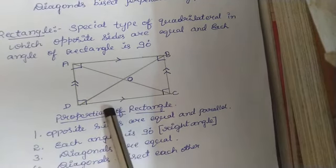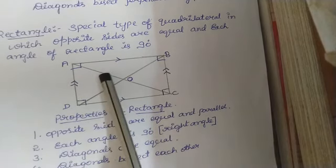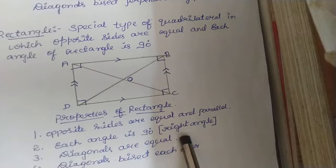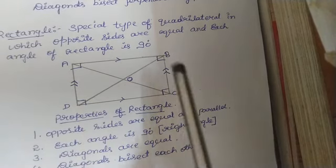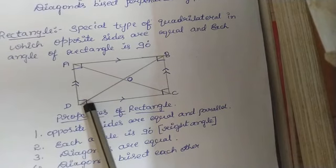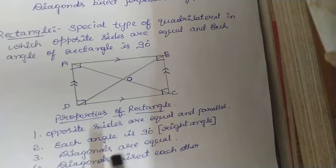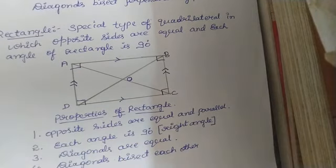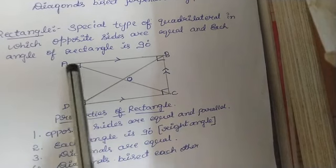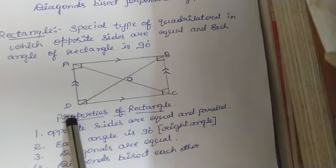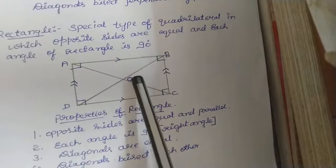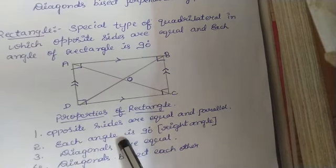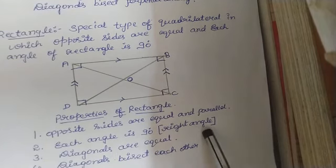Each angle is 90 degrees or a right angle. Angle A equals angle B equals angle C equals angle D — all four angles are equal to 90 degrees. Next, diagonals are equal: AC is equal to BD. Then, diagonals bisect each other: AO is equal to OC, and BO is equal to OD. These are the main properties, in which each angle being 90 degrees is the most important property of a rectangle.